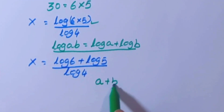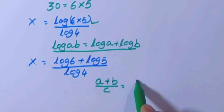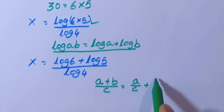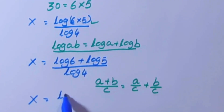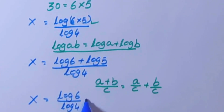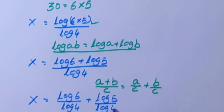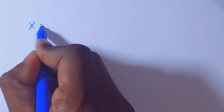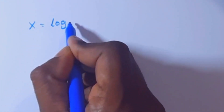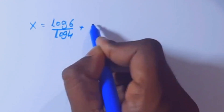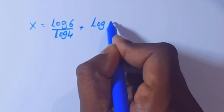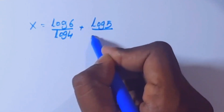Now splitting the fraction using (a + b)/c equals a/c plus b/c, we get x equals log 6 divided by log 4 plus log 5 divided by log 4.